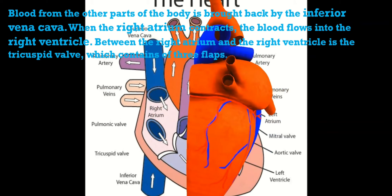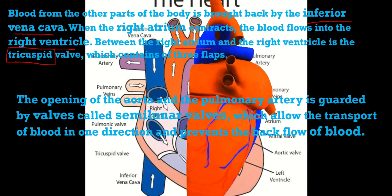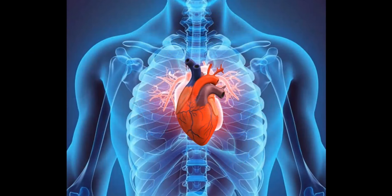Blood from other parts of the body is brought back by the inferior vena cava. When the right atrium contracts, blood flows into the right ventricle. Between the right atrium and right ventricle is the tricuspid valve, which contains three flaps. The opening of the aorta and pulmonary artery is guarded by valves called semilunar valves, which allow blood to flow in one direction and prevent backflow.